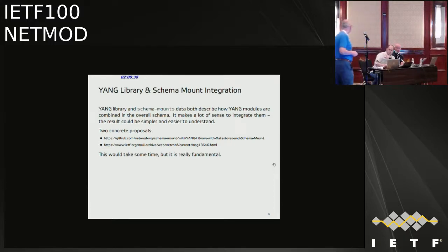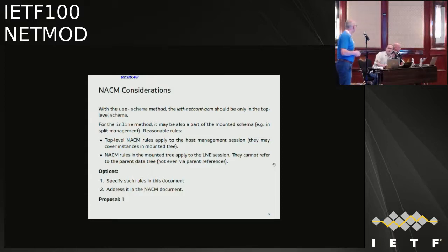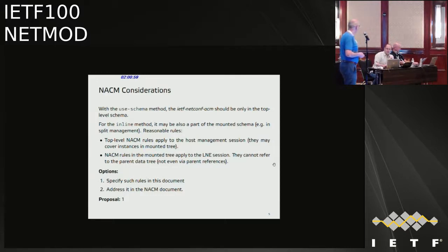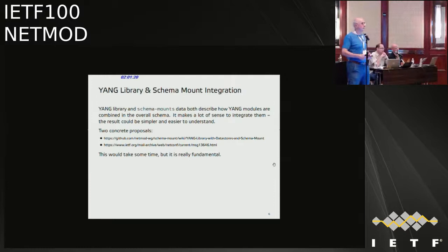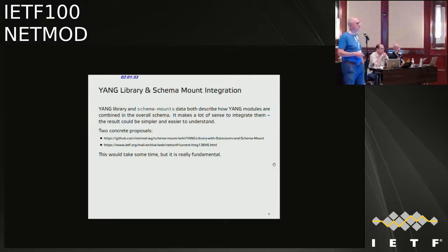Martin's comment from Jabber is that NACM considerations must be covered in this document before it goes forward. Rob Wilton noted that tomorrow in the netconf session he'll cover the different options for Yang Library being looked at, and that Yang Library is open to updates — the timelines may align, slowing things down by only a couple of months. The presenter made a high-level proposal to structure the specification into two documents: document one would be a small meta-modeling language at the level of Yang modules — a combination of Yang library describing the collection plus the use-schema structure describing how modules combine into the schema hierarchy; document two would cover the inline case of schema mount with special use cases for NMDA, NACM, configuration and provisioning of mounted data.